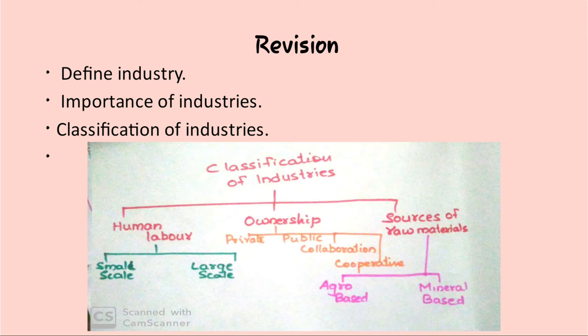The third classification is source of raw materials, divided into agro-based industries and mineral-based industries. Agro-based industries are based on raw materials obtained from agriculture — for example, cotton textile industry, silk textile industry, jute, wool, sugar, paper etc.